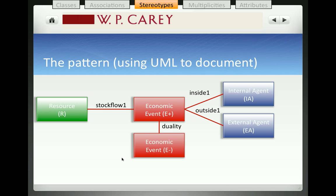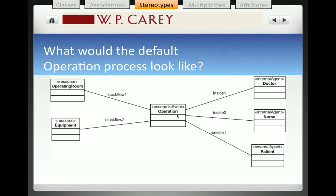The pattern we see in business is that economic events occur in pairs. There's an economic increase event that's paired in a duality association with a decrease or decrement event — think about sales and cash receipts, or purchases and cash disbursements. For each economic event there is a resource associated with it, the resource that's either being increased or decreased. There will be at least one internal agent and at least one external agent. So the completed pattern shows a pair of economic events, both of which have an REA pattern: the resource, the event, and two agents.